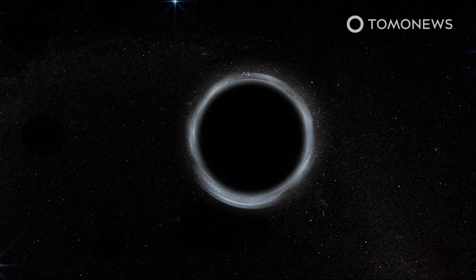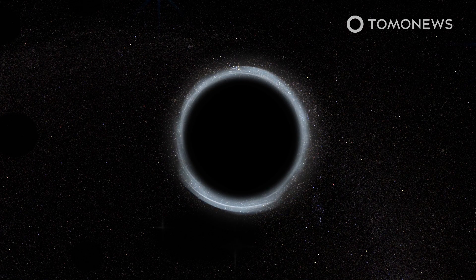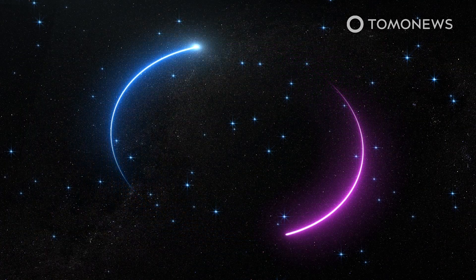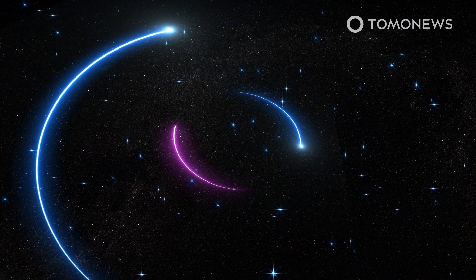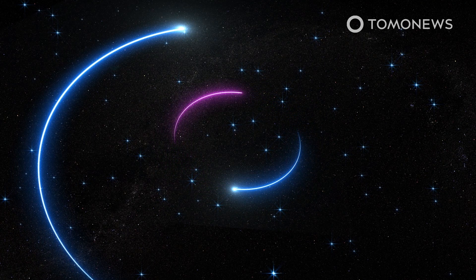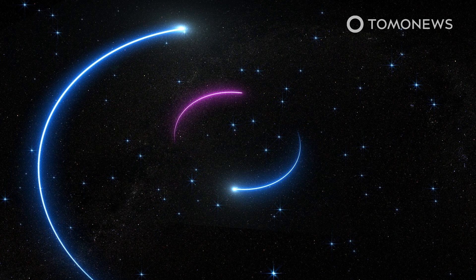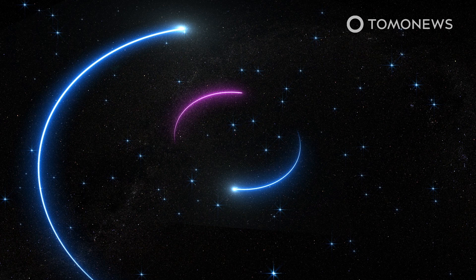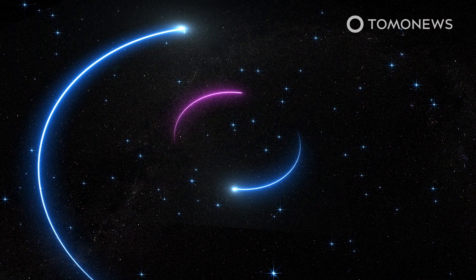Scientists at the European Southern Observatory report they may have spotted a black hole so close to Earth that its two companion stars are visible to the naked eye. According to the paper in Astronomy and Physics, the black hole is 1,000 light-years distant in the HR6819 system, which is part of the Constellation Telescopium.